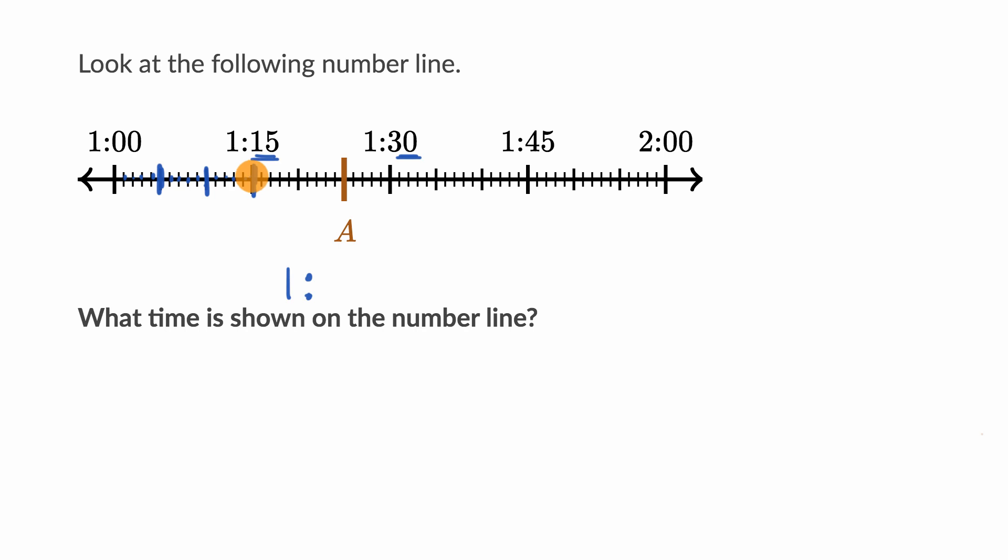We can see that we can go from 15 to 16, 17, 18, 19, 20, 21, 22, 23, 24, 25. So we're 25 minutes past one o'clock.